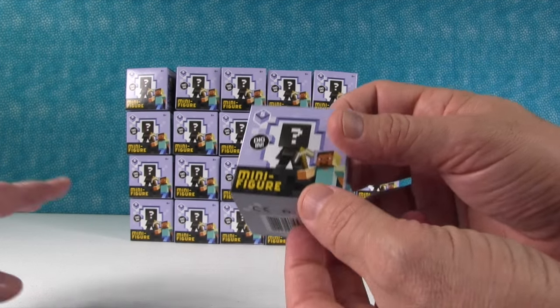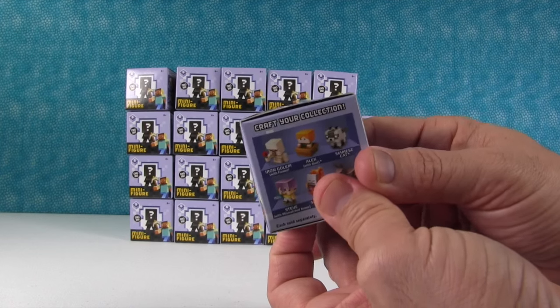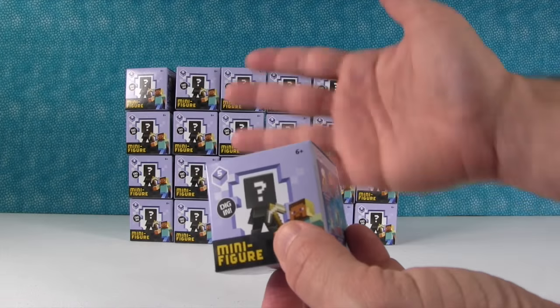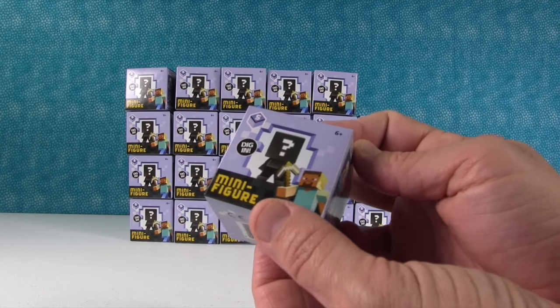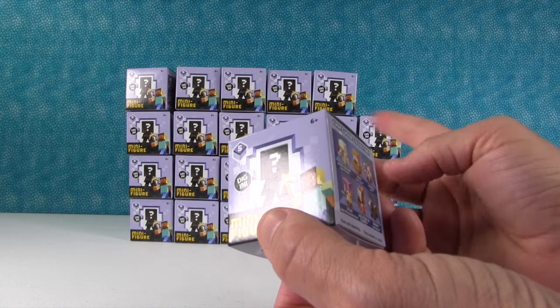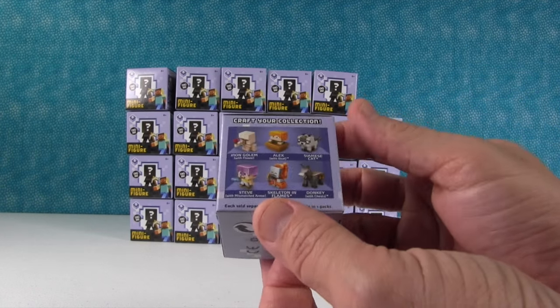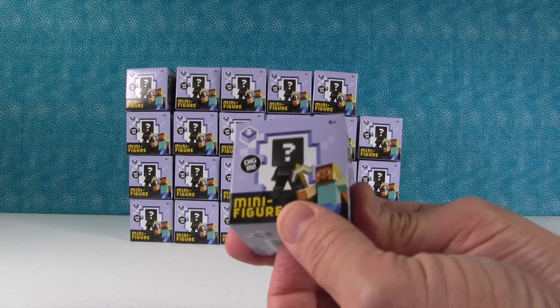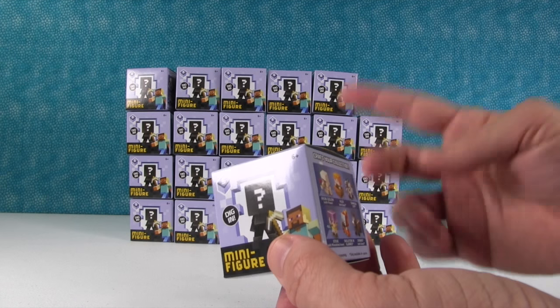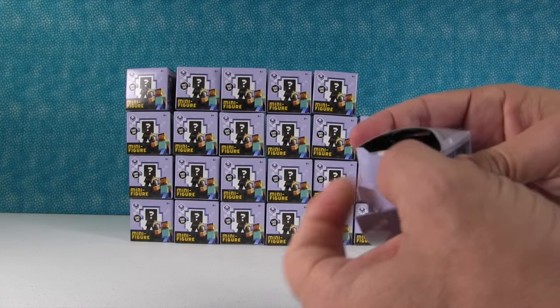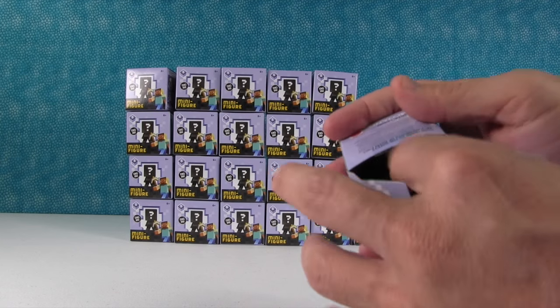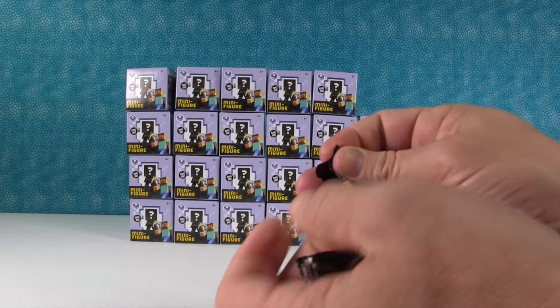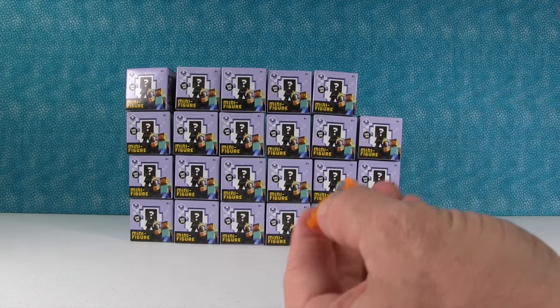So what we're gonna do, we have a whole bunch of boxes here. I think we have 24 boxes. There's 12 different figures in the set. Shannon and I are just gonna take turns opening up figures until we get all 12 or until we're out of boxes. Like all the other ones they do have codes, but we're not looking at the codes. We just want the fun of opening them randomly and seeing what we get.